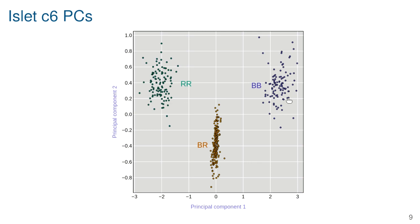I'm interested in identifying the causal gene underneath this locus. Starting with the mice that have constant genotype across the region, the first and second principal components cluster into three clear groups corresponding to genotype. If I then overlay all the other mice — those that didn't have constant genotype across the region — all of them fit perfectly into those three clusters, which suggests we can infer the genotype of those mice at the causal locus.